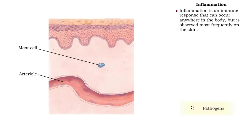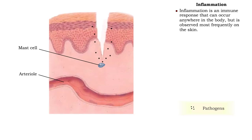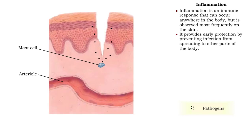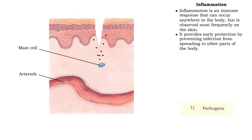The inflammatory response provoked by infection or tissue damage can occur anywhere in the body. It is most commonly recognized as redness and swelling on the skin. Inflammation provides early protection by confining the pathogens to the site of infection or trauma, and also promotes repair of damaged tissues.